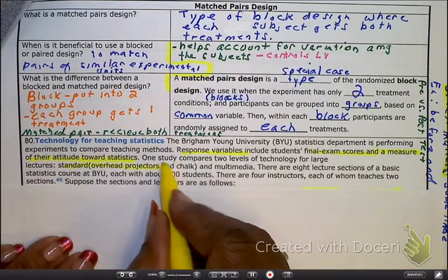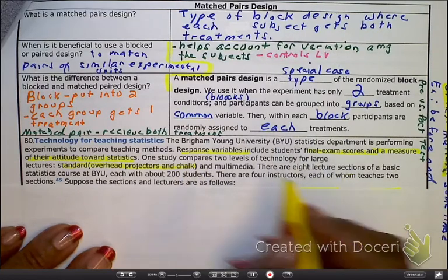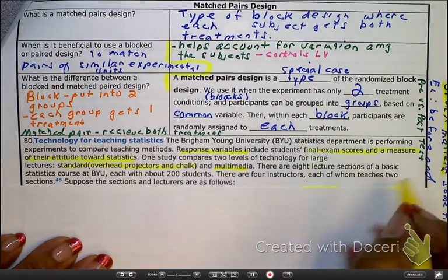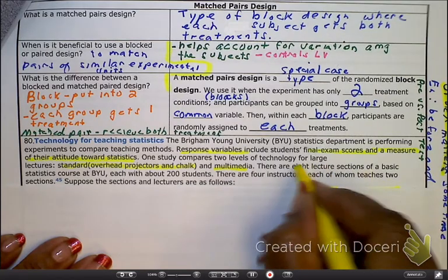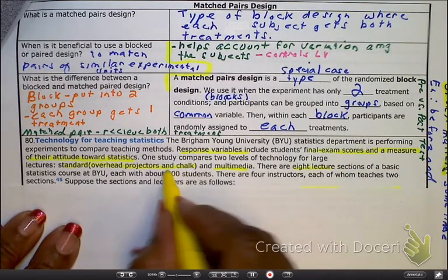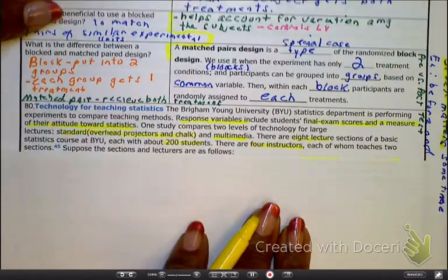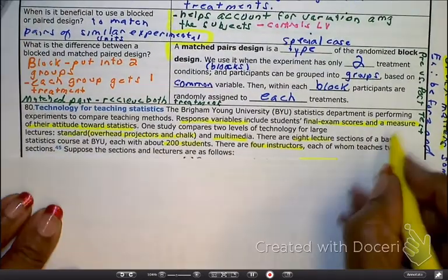One study compares two levels, meaning we have standard old school overhead projector and chalk - that still exists I guess. And the other one is multimedia. We have eight lecture sections and 200 students and we have four instructors, each of whom teach two sections. That's important.